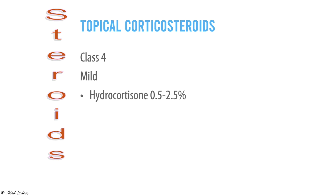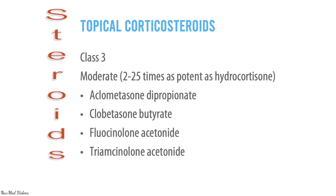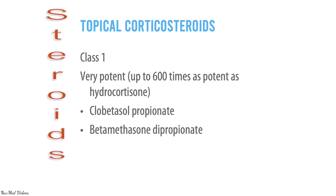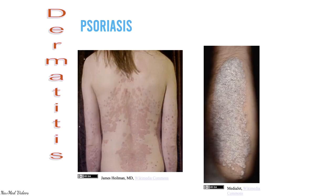Topical steroids are classified by potency. Mild: hydrocortisone 0.5–2.5%. Moderate (up to 25× hydrocortisone): includes alclometasone, clobetasone, fluocinolone, triamcinolone. Class 2 (50–100× hydrocortisone): includes betamethasone, diflucortolone, fluticasone, hydrocortisone butyrate, mometasone, methylprednisolone. Class 1 — very potent, up to 600× hydrocortisone — examples include clobetasol and betamethasone dipropionate. Next is psoriasis.